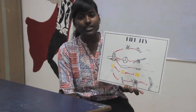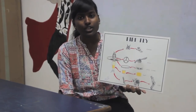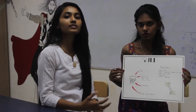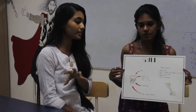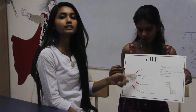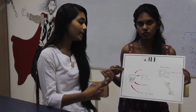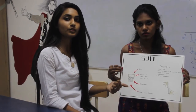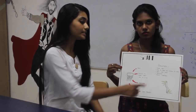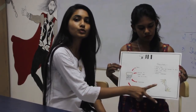Our third assignment was to redesign an existing product with disadvantages. We chose a key bunch because it was noisy, difficult to carry many keys at once, confusing, and required too much space. The solution we found was a Z-shaped metal piece with two screws that could hold keys on both sides.